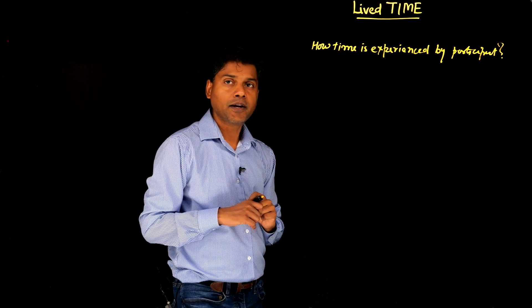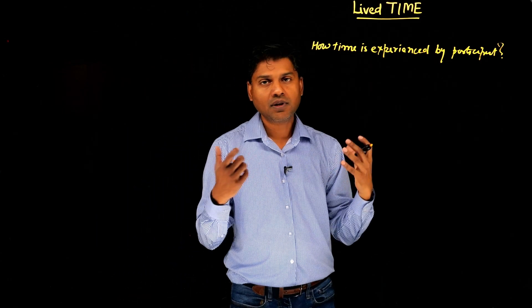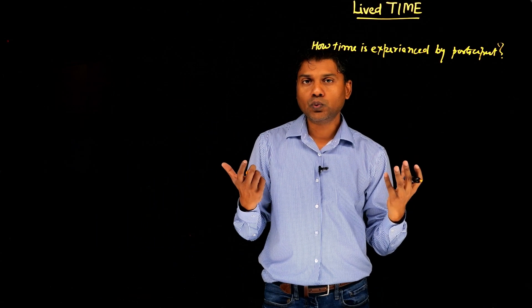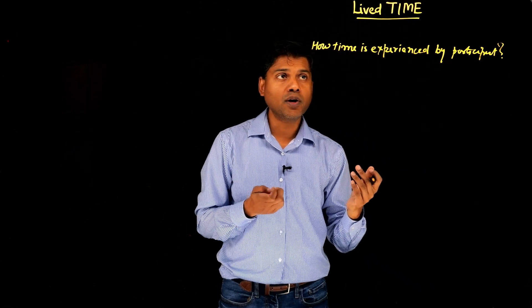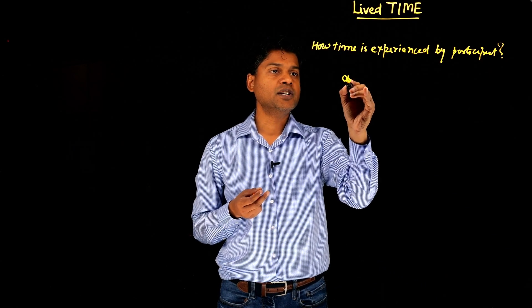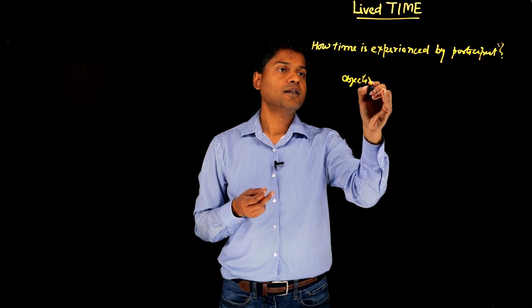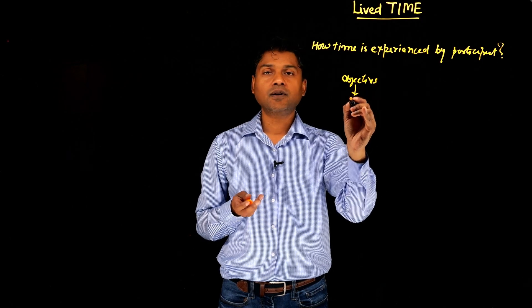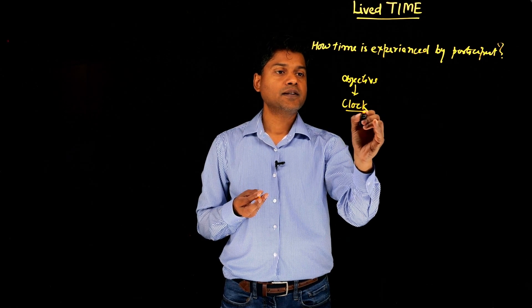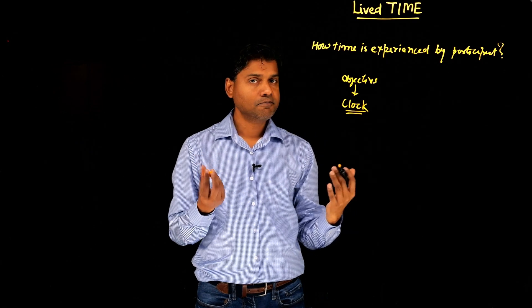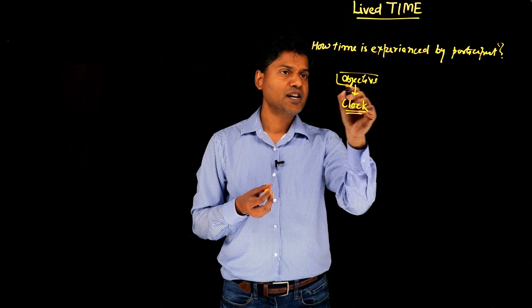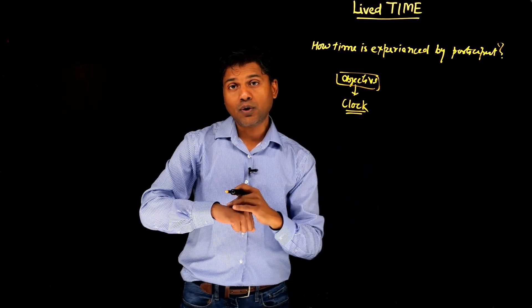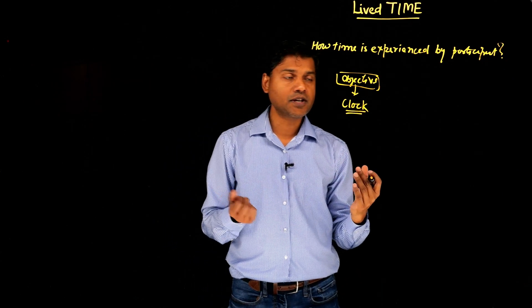When you think about time, we can categorize time into two kinds. One is obviously the objective time, which you can also call clock time. That is more universal objective time that we look through our watches and say this is the time right now.